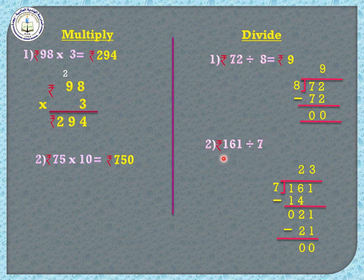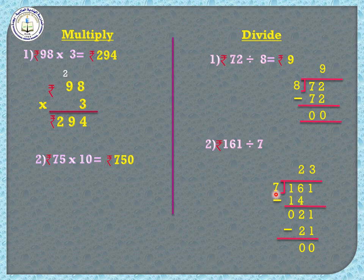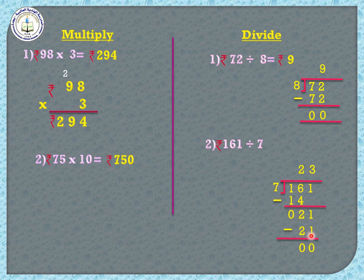Next: rupees 161 divided by 7. 161 inside the bracket, 7 outside. Start from the first digit 1 — 1 is smaller than 7 so we cannot divide. Take the next digit too: 16. How many 7's in 16? 7 twos are 14 — write 2, subtract: 6 minus 4 is 2, 1 minus 1 is 0. Bring down 1 — now we have 21. How many 7's in 21? 3 times — 3 sevens are 21, subtract: remainder 0. The answer is rupees 23.